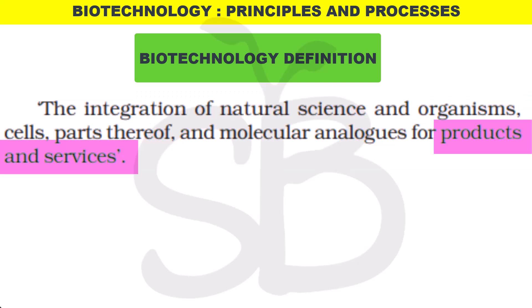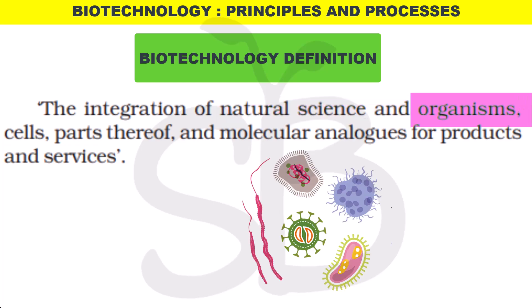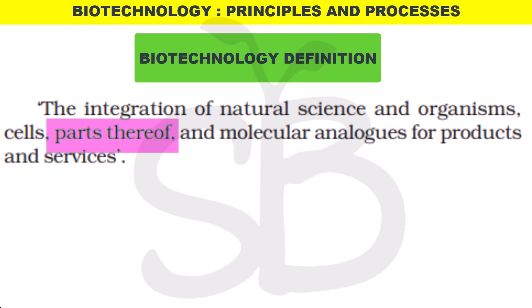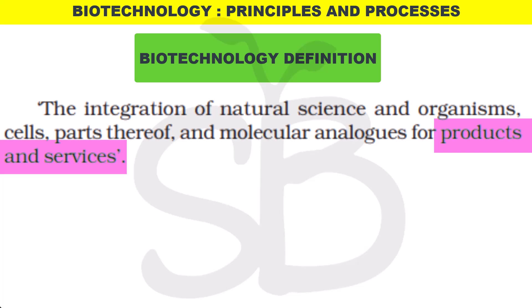There are many industries that can help us using different organisms in natural sciences. We use organisms, we use cells, we use parts thereof, we use the organism's components, and we use molecular analogs — for example, enzymes. We use molecules in the cell to produce products and services through the biotechnology process.